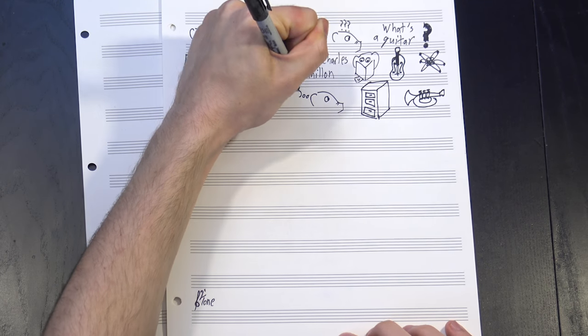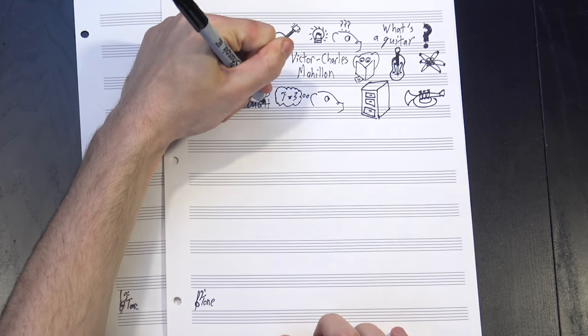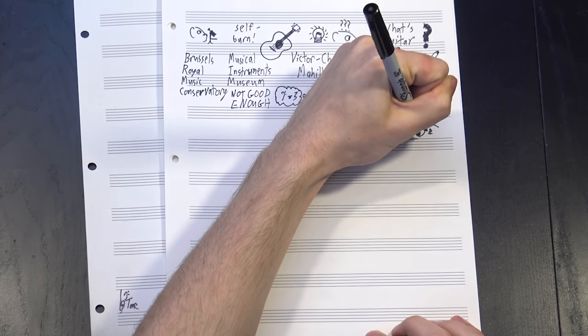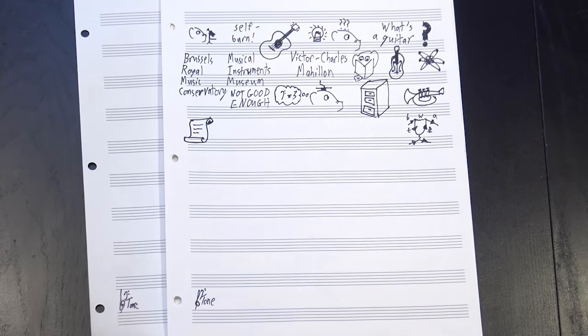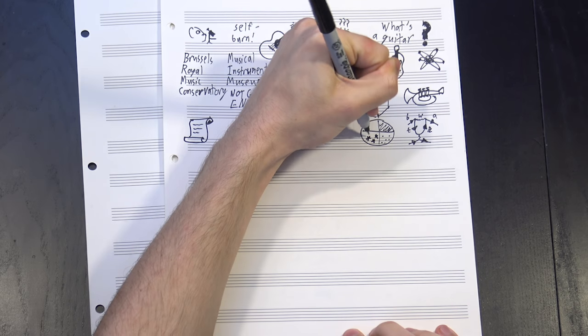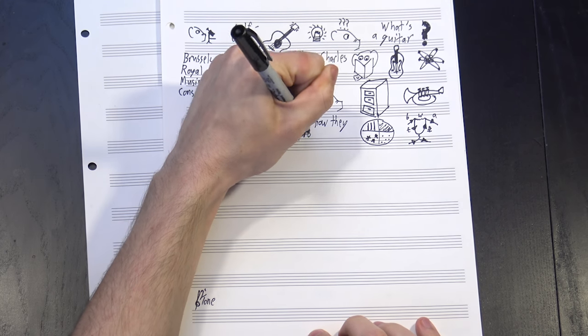Problem was, there was no better way to sort them than gut feeling, and that wasn't nearly good enough. So faced with the lack of a sufficiently rigorous system, Maheen did what any good academic would do and just made his own. He started by breaking them up into four broad categories based on how exactly they produced sound.